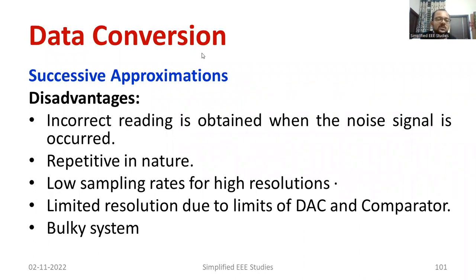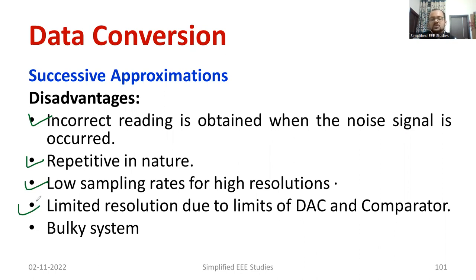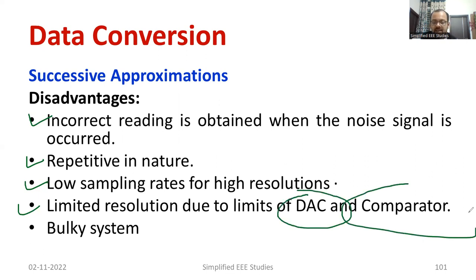Speaking about the cons — the drawbacks — it has a repetitive nature since it is a closed loop. Incorrect readings may be obtained because the inclusion of noise signals may affect the results. Low sampling rate is another problem; if you go for higher resolution, the sampling rate will be less. Also, there is limited resolution due to the limits of the DAC and comparator, which are extra components. Because of these extra components, the system size becomes very high and the system becomes more bulky.